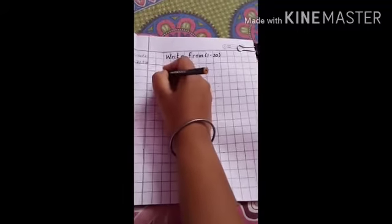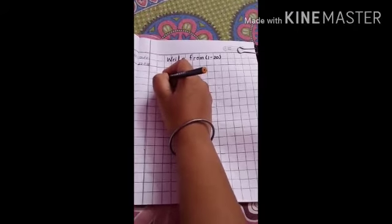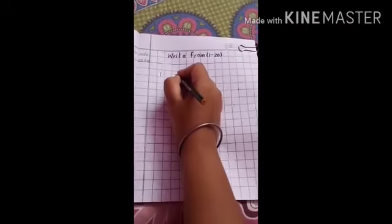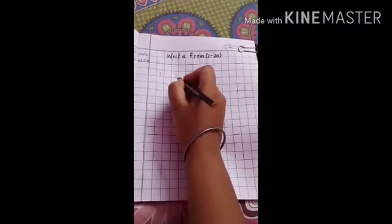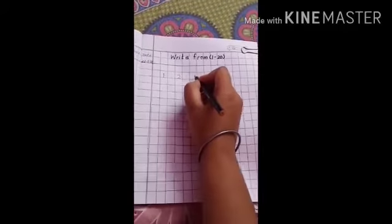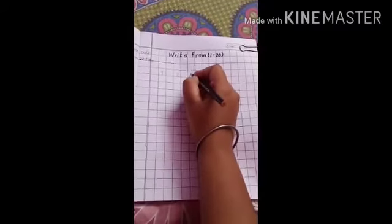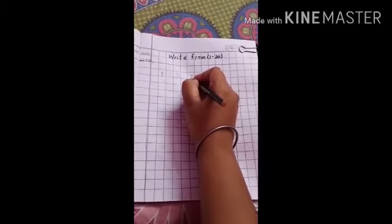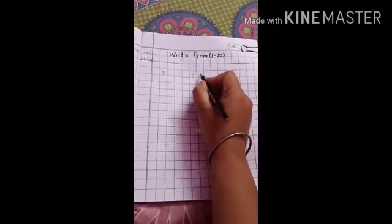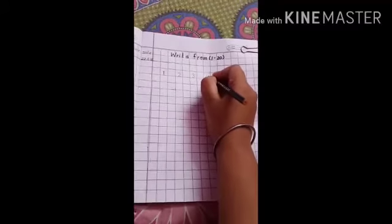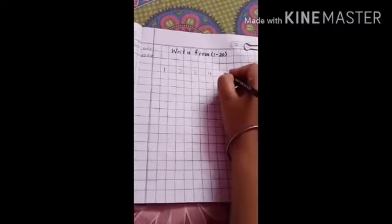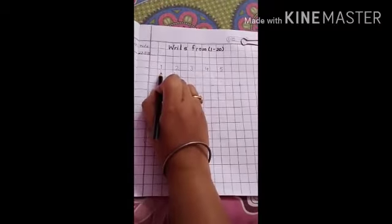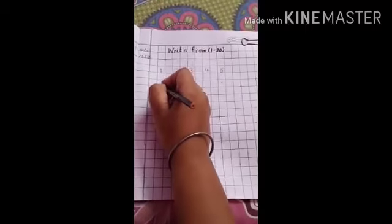Write 1. Now, what's come after 1? Yes, leave one box and write 2. What's come after 2? Yes, leave one box and write 3. What's come after 3? Yes, 4. What's come after 4? Yes, 5. Now, come down, leave one box and write 6.